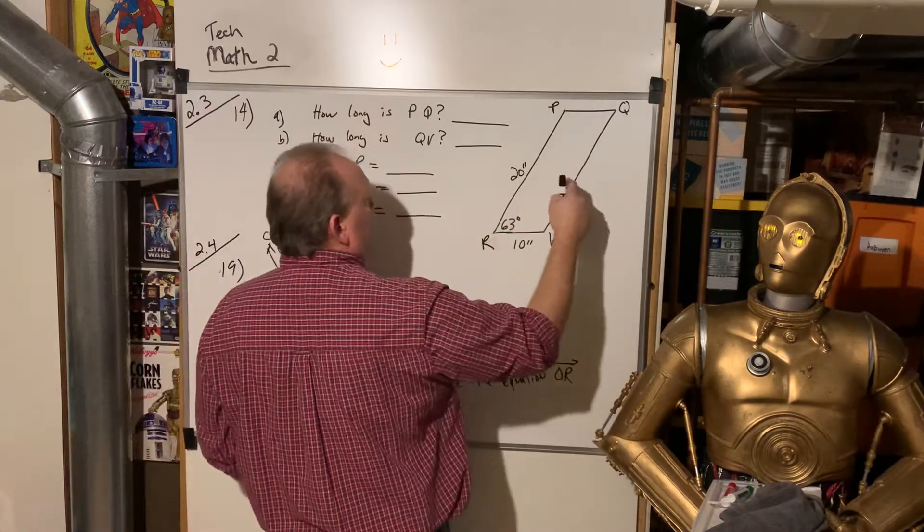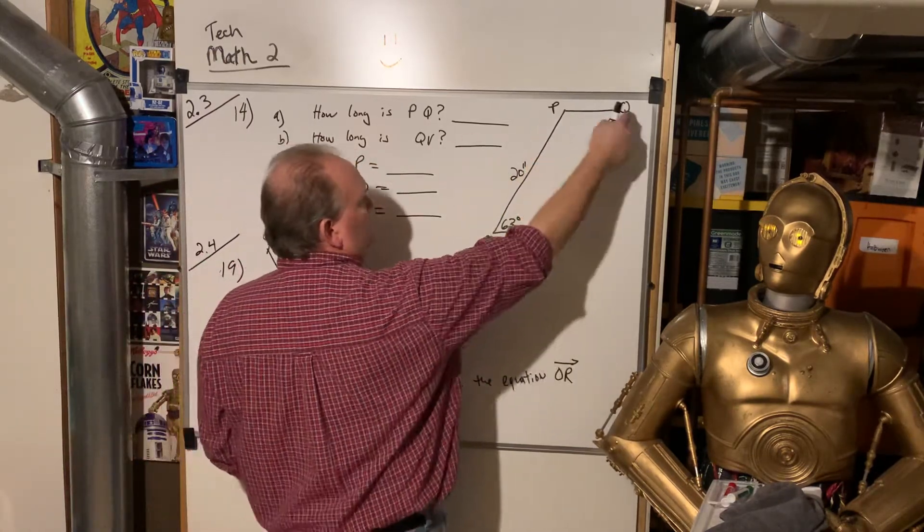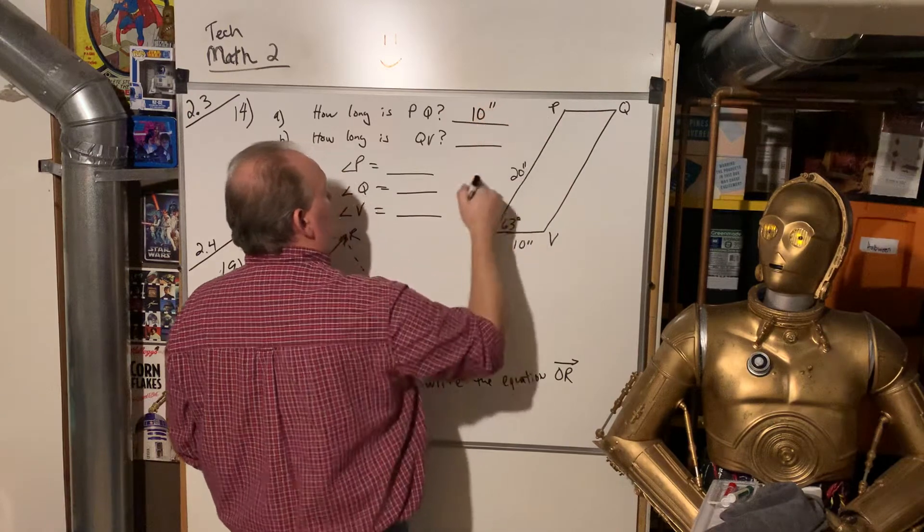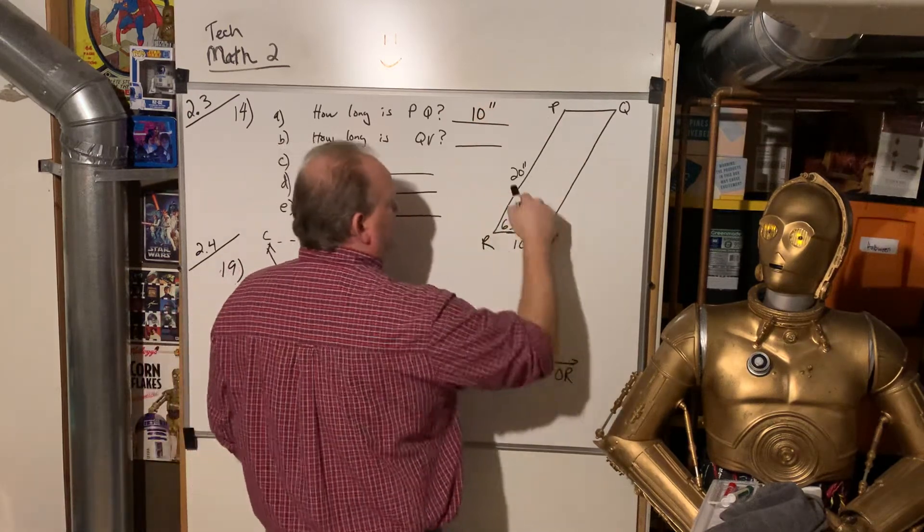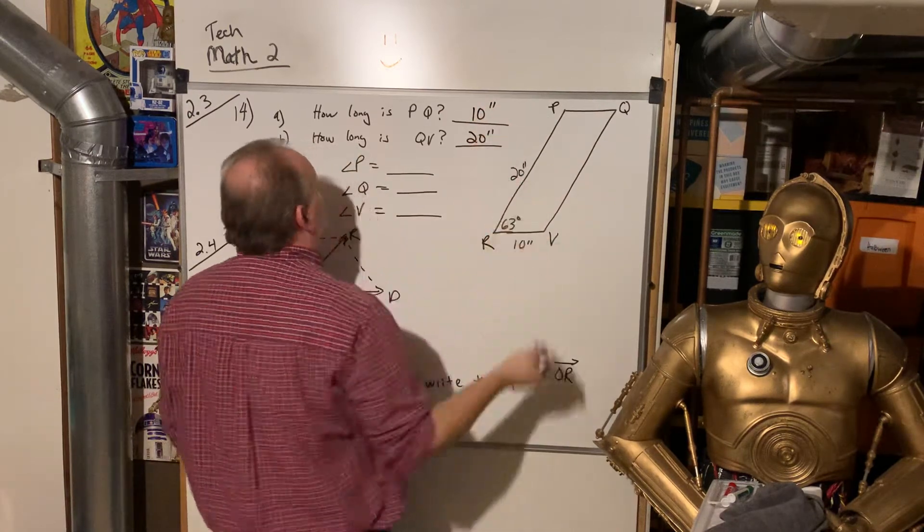Opposite sides are always the same. So when they say how long is PQ, that's going to be 10 inches. How long is QV, that's going to be 20 inches. So that's pretty easy.